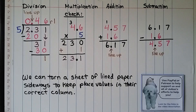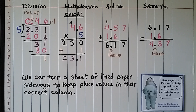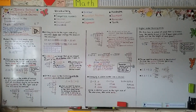Remember, we can turn a sheet of lined paper sideways to keep place values in their correct column. There are links in the video description to PayPal and Patreon to help support these efforts. In the next lesson, 5.8, we're going to be doing some word problem solving with decimal division and the strategy work backwards. I hope to see you there — don't forget to hit the like button. Bye.